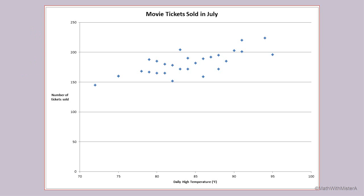Here's the data we're going to use for our example. It comes from a small movie theater that noticed that during hotter days, more people came to see a movie, probably because of the air conditioning. For the month of July, they recorded the number of tickets sold along with the daily high temperature, and each individual point represents the high temperature from that day and the number of movie tickets sold.